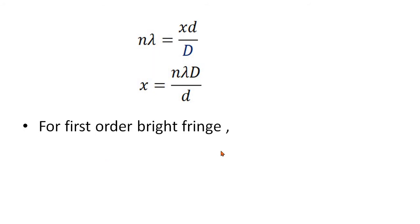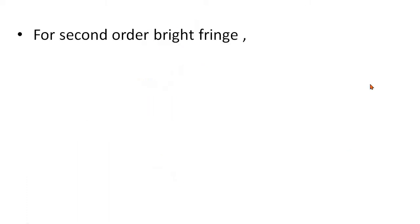For first order fringe, we substitute n equal to 1, giving x1 equal to lambda d divided by D. Similarly, for second order fringe, n equal to 2, giving x2 equal to 2 lambda d divided by D, and so on.